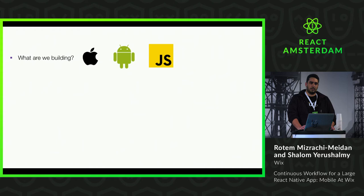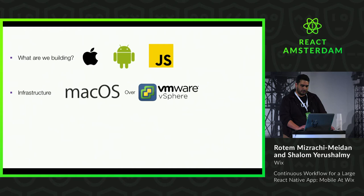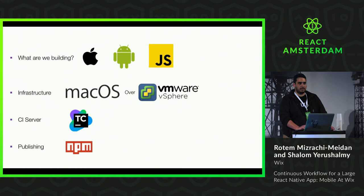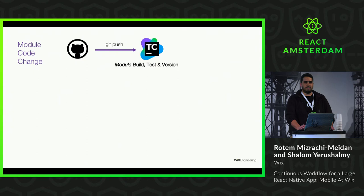So let's talk about our infrastructure stack. We're building iOS, Android, and JavaScript. Our hardware is macOS agents over VMware. We use nested virtualization for running x86 Android emulators and iOS emulators. The CI server is TeamCity, which we use for building, testing, and versioning. The modules are published to an internal NPM, which plays nicely with React Native. Module or engine code changes are pushed to GitHub, triggering a module build on TeamCity, running tests, and if all good, getting versioned and published to NPM.